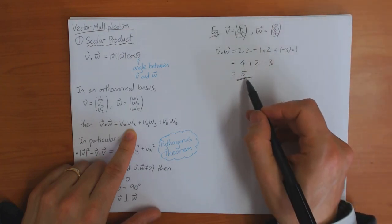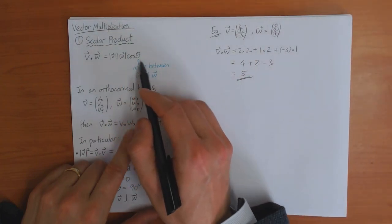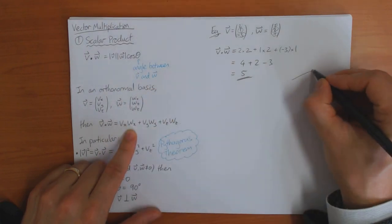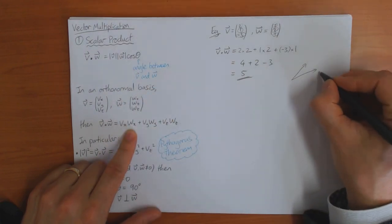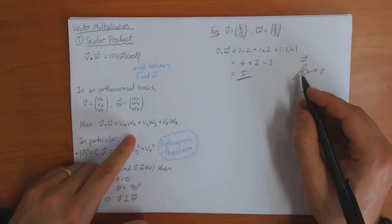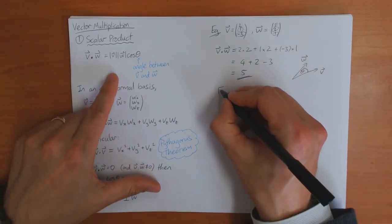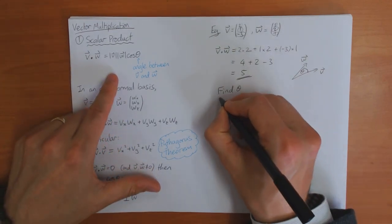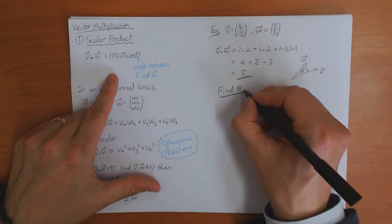A useful thing you can do with this result is calculate the angle between these two vectors. So I've got these two vectors, v and w, that look something like this. And I want to know what's the angle theta between them. So then let's find theta.